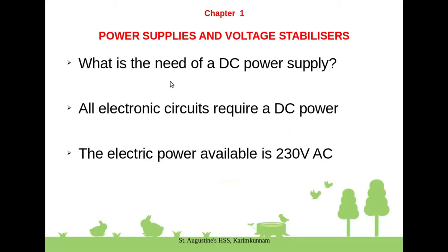Which is the need of a power supply? All electronic circuits require a DC power. The electric power available to us is 230 volt AC, and we need to convert it to DC power for our electronic circuits.